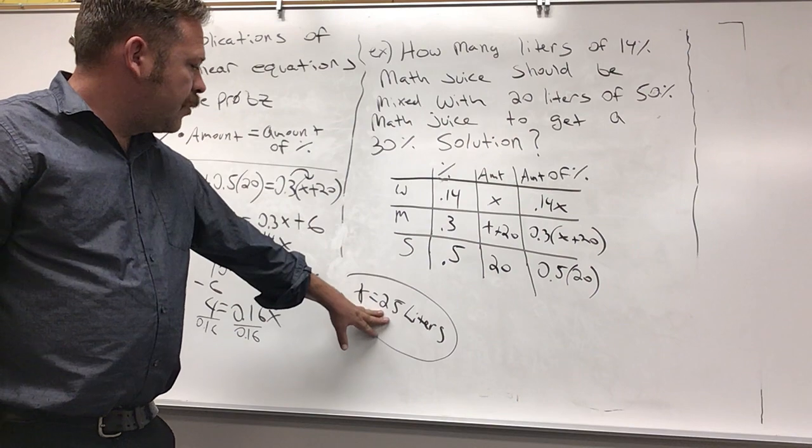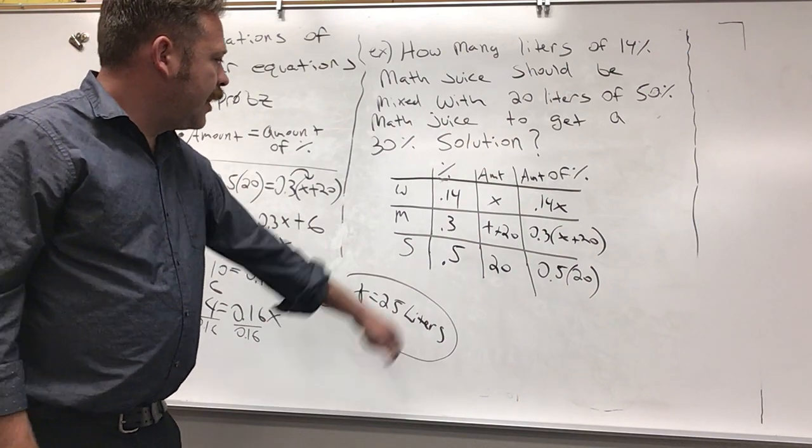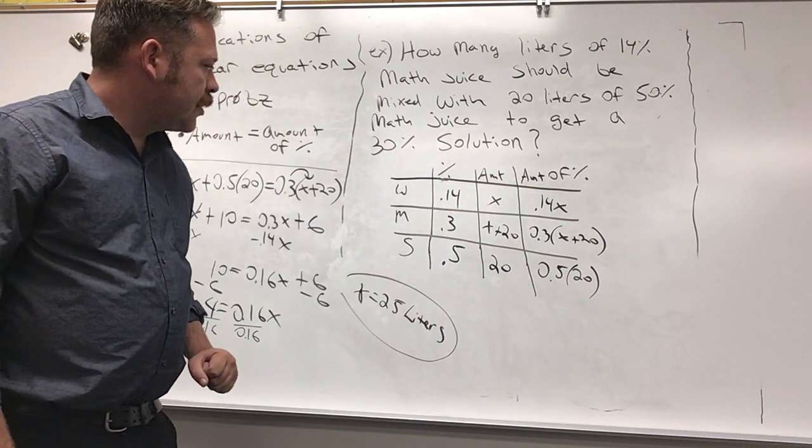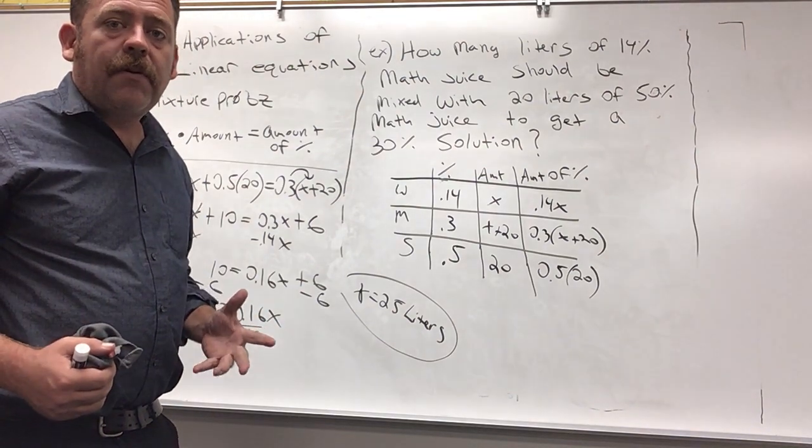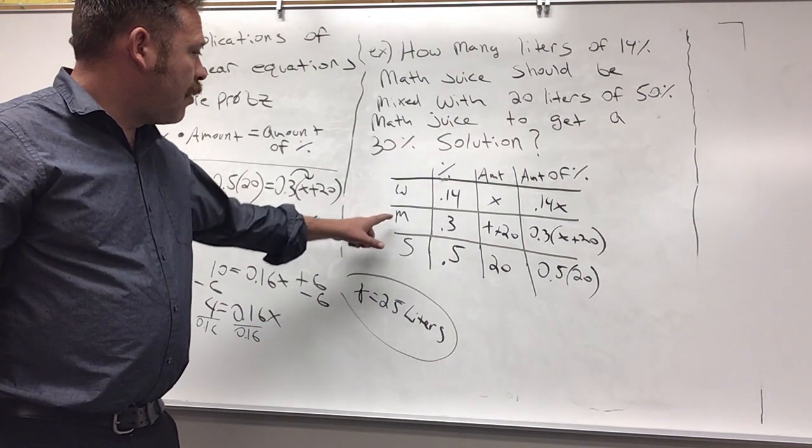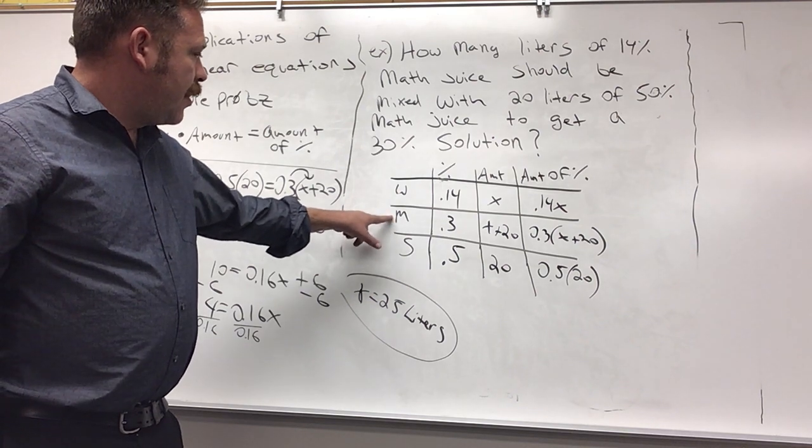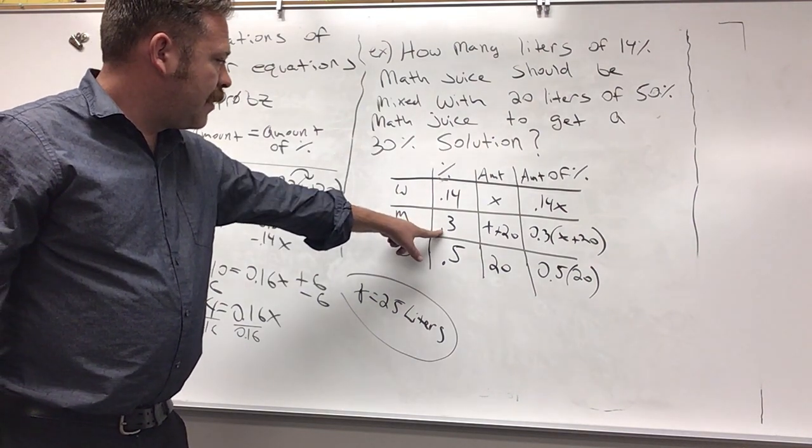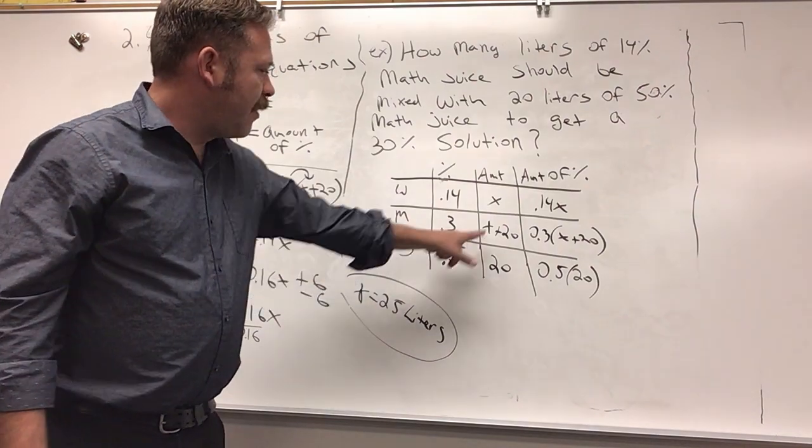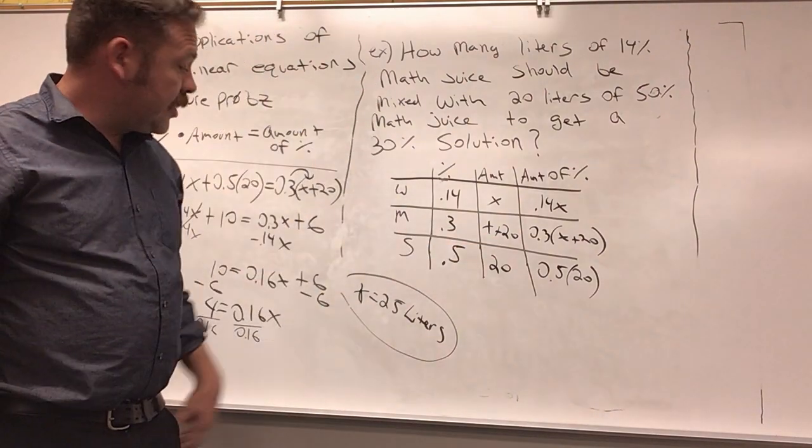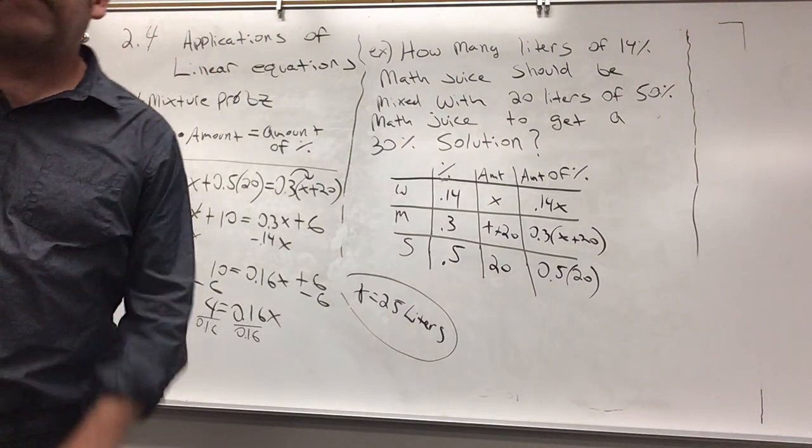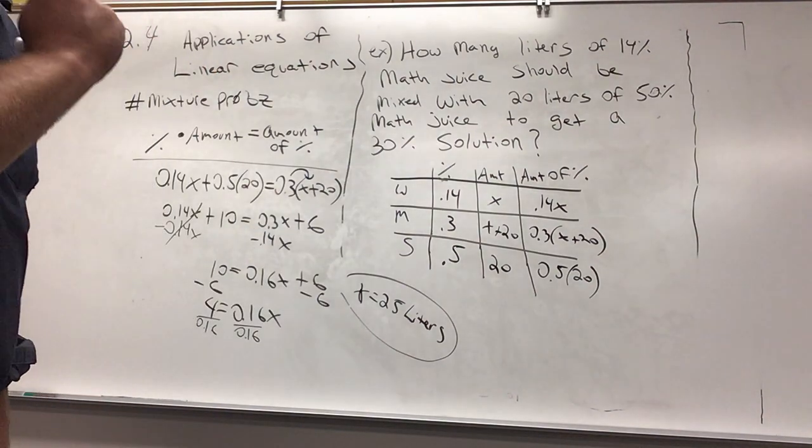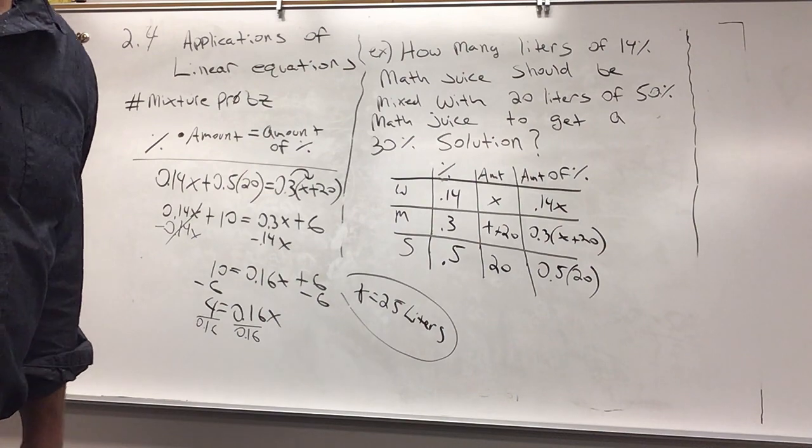This is the amount of 14% math juice that would give us 30% math juice: 25 liters. If we want to take it one small step forward and I wanted to find out well how much of that middle strength or 30% math juice would I have, I could just take that x value and plug it in here. But the answer to this question is 25 liters. Thank you so much, I appreciate it. One more type of 2.4 application problem.